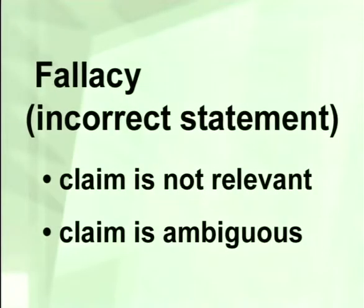The first is where the claim is not relevant — therefore, a fallacy of relevance. The second is where the claim is ambiguous — a fallacy of ambiguity. With a fallacy of relevance, what really happens is that your claim is not supported by the reasons you're giving, so that the two are not connected to each other.